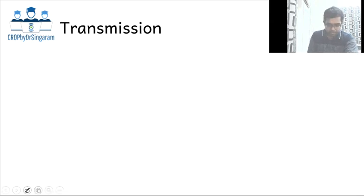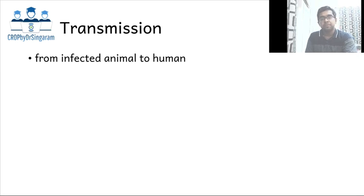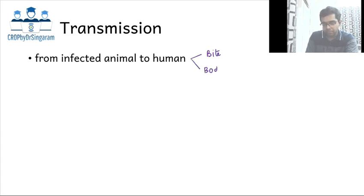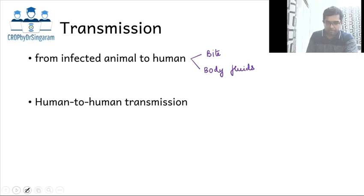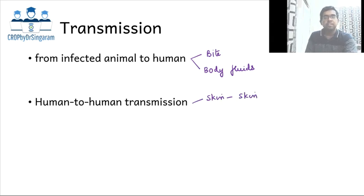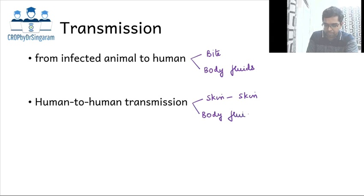Coming to the ways by which it is transmitted: it is primarily transmitted from an infected animal to humans by bite of the infected animal or by coming in contact with the body fluids of the infected animal, which includes infected secretions as well as blood. It is also possible for human-to-human transmission to occur, primarily by skin-to-skin contact with lesions — especially skin lesions as well as mucocutaneous lesions — or by coming in contact with the body fluids of infected persons.